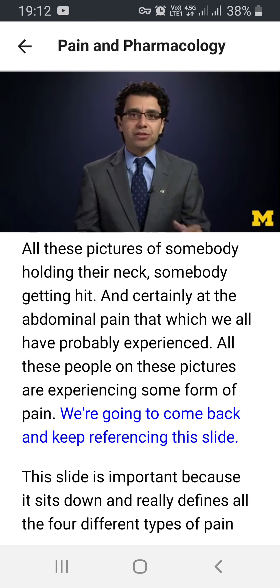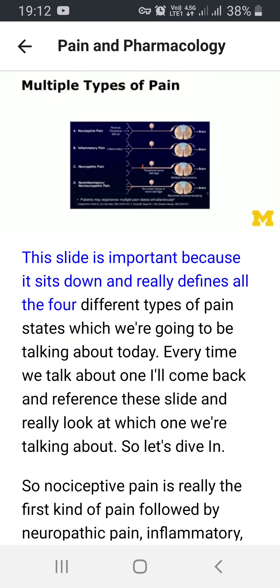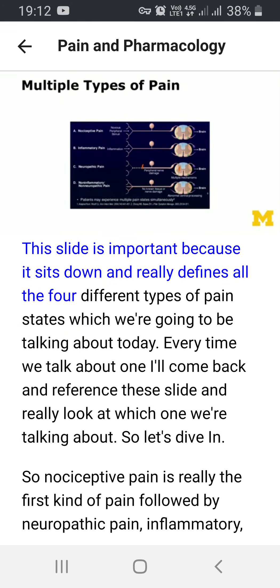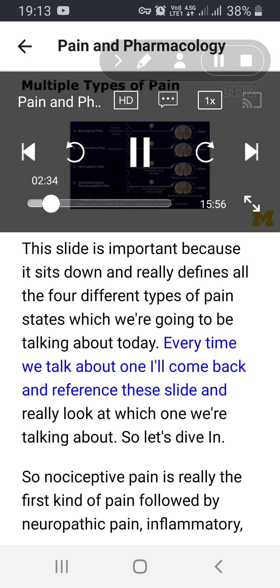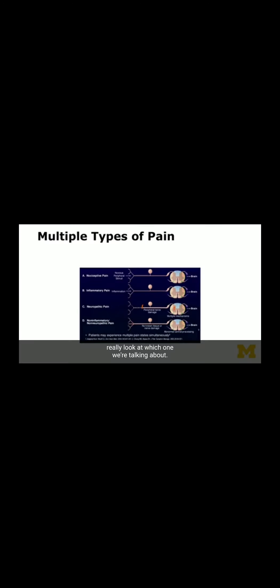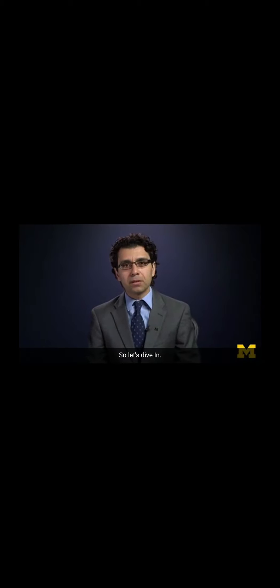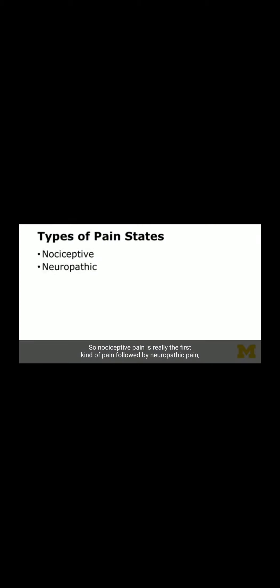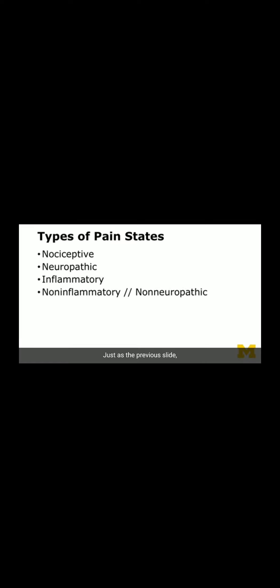We're going to keep referencing this slide because it really defines all four different types of pain states we're going to be talking about today. Every time we talk about one, I'll come back and reference this slide. So let's dive in. The four pain states are: nociceptive pain, neuropathic pain, inflammatory, and non-inflammatory non-neuropathic.